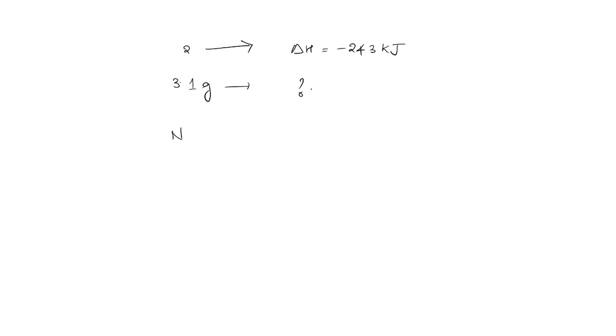We know that number of moles = weight / molecular weight. Here weight is given as 3.1 g divided by molecular weight 31. So this is equal to 0.1 mole.